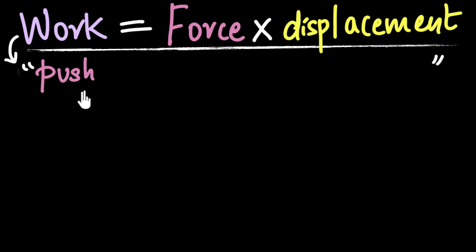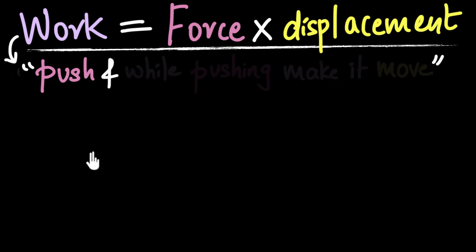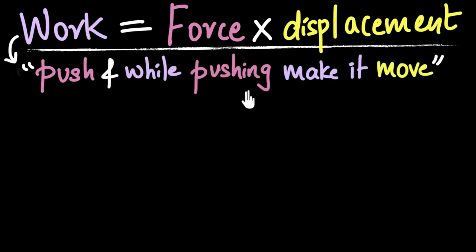Then one, you need to push on it. Push or pull on it because you need to provide a force. And while pushing or pulling on it, you have to make it move. That's the condition to do work in physics. So you have to push on an object because if you don't push or pull, the force will be zero, work will be zero. And while pushing, you have to make it move because if you don't make it move, there will be no displacement, and again, work will be zero.